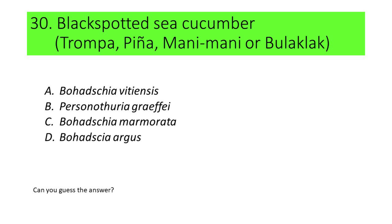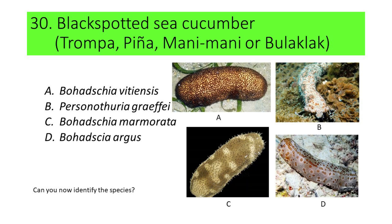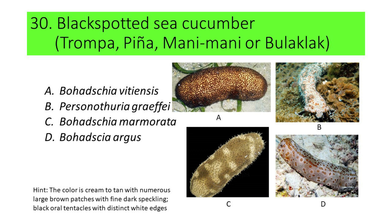If not, here are the pictures. A. Bohadschia vitiensis, B. Pearsonothuria graeffei, C. Bohadschia marmorata, and D. Bohadschia argus. Can you now identify the species? If not, here's another hint. The color is cream to tan with numerous large brown patches with fine dark speckling. The black tentacles around the mouth region have distinct white edges. If your answer is B or Pearsonothuria graeffei, you're correct. Pearsonothuria graeffei is commonly called black spotted sea cucumber.